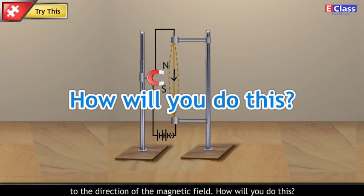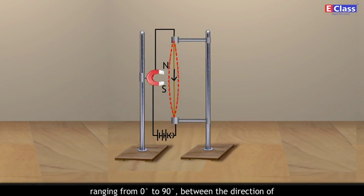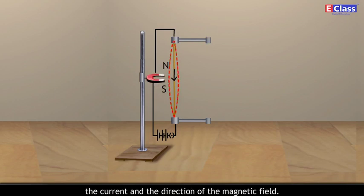How will you do this? Answer: This can be done by measuring the bending of the wire for various angles ranging from 0 degree to 90 degree between the direction of the current and the direction of the magnetic field.